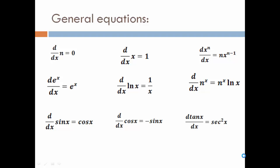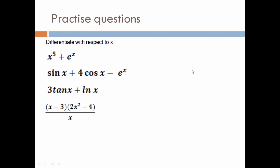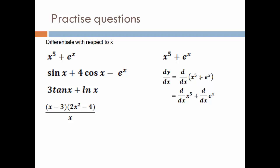Memorize the general equations by practicing as much as you can. Let us look at some practice questions — we will take d/dx throughout. First: dy/dx of x⁵ + e^x. Differentiation applies directly when there is a plus or minus sign, so: d/dx of x⁵ + d/dx of e^x. Using the rule x^n → n·x^(n−1), d/dx of x⁵ is 5x⁴, and e^x stays as e^x. So dy/dx = 5x⁴ + e^x.